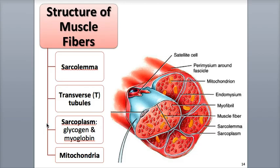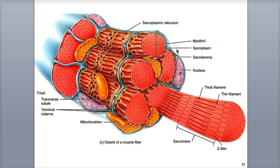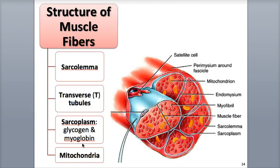Inside the sarcolemma is the sarcoplasm, which is the cytoplasm of the muscle fiber. It contains lots of glycogen, which is a large polysaccharide made of many glucose subunits — basically an animal's version of a plant's starch molecule. Glycogen's main function is to serve as the fuel to power ATP production. The sarcoplasm also contains a supply of myoglobin, a hemoglobin-like protein that temporarily stores and releases oxygen molecules that diffuse into the muscle fiber from the surrounding interstitial fluid.